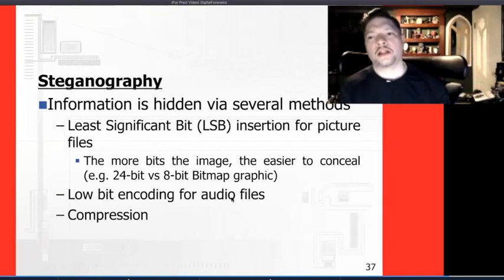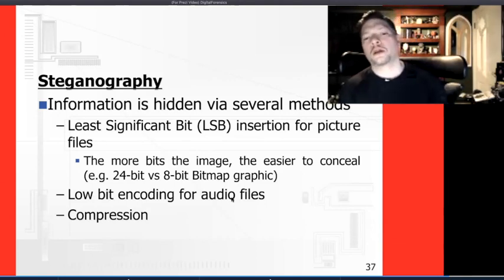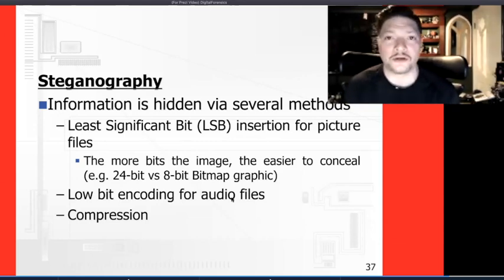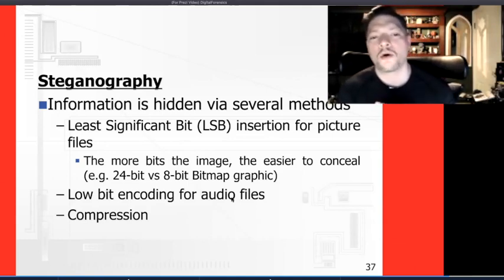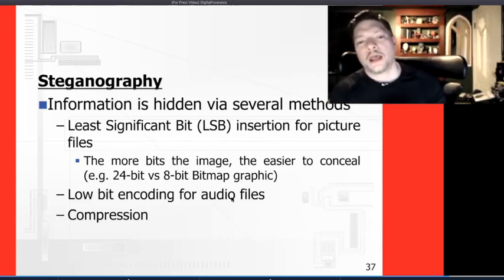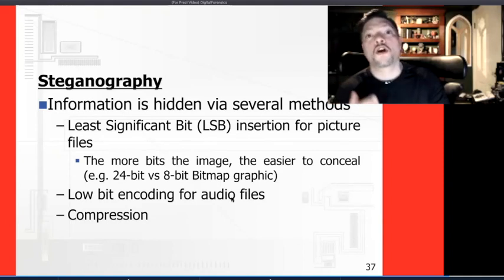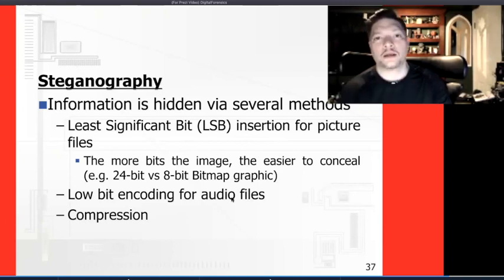Steganography uses several methods to hide information depending on the medium — whether it's a graphic file or an audio file. The most important method to understand is the Least Significant Bit, or LSB. The more bits an image has, the easier it is to conceal information. A 24-bit picture has good quality and can hide a lot of information.